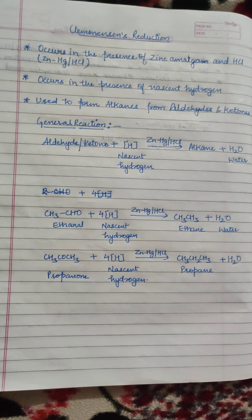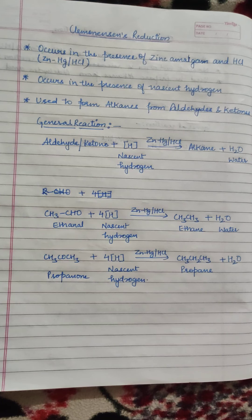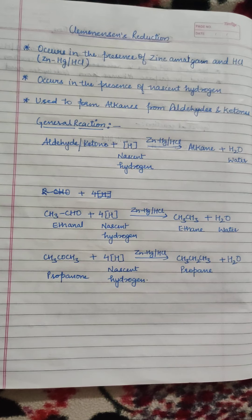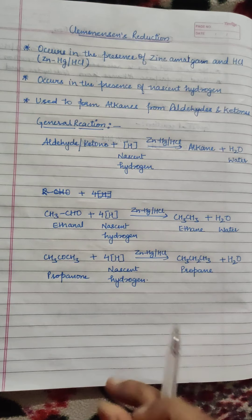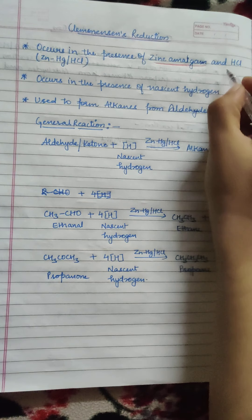A few points which you need to keep in mind — as I have already told you, organic reactions mean that you need to keep in mind the catalyst and the temperature condition for the reaction to take place. The first point is that Clemmensen's reduction reaction always occurs in the presence of zinc amalgam and HCl.